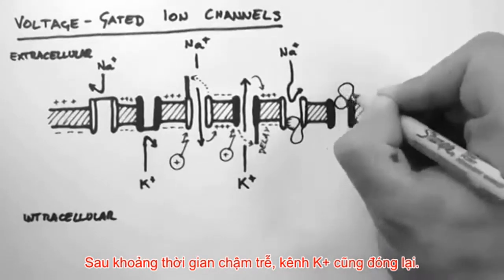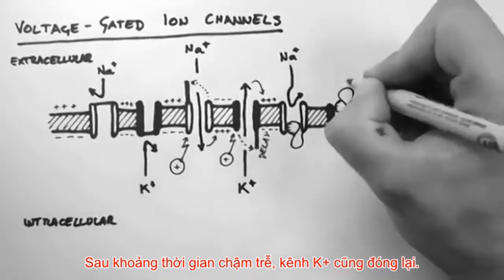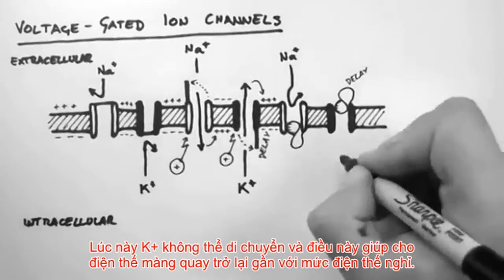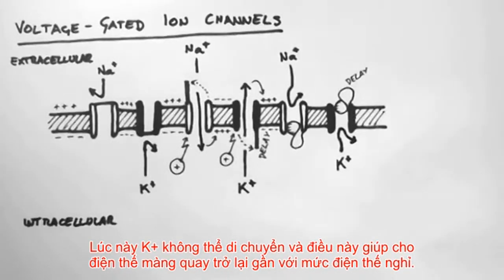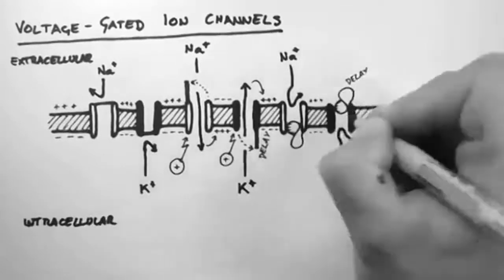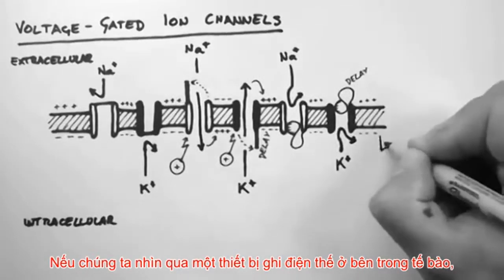After a delay, the potassium channels also close. Now potassium can't flow, and this keeps the membrane potential back near the resting membrane potential. So if we look at a voltage recording